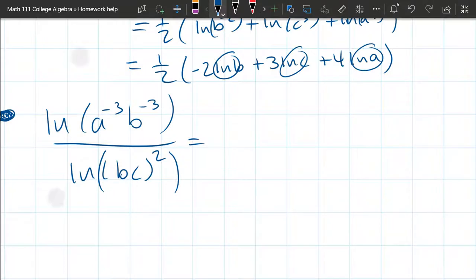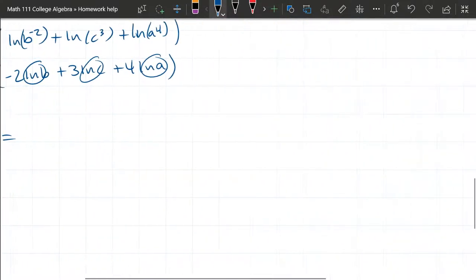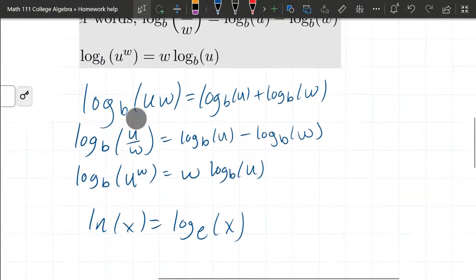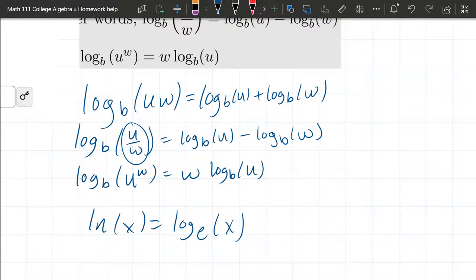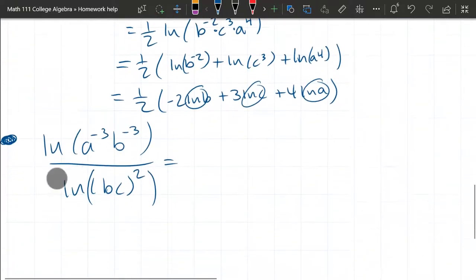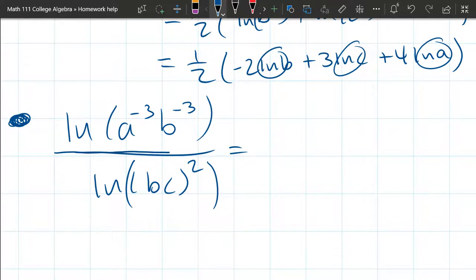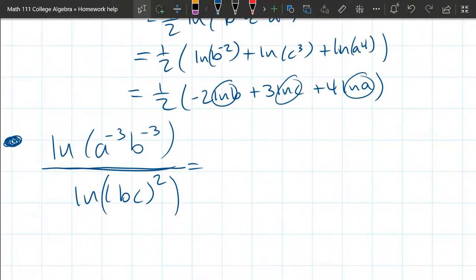First of all we're dividing logs. There's no way to simplify that. If you think about it, there's a division rule, yes there is a division rule, but it's only when division's happening inside. We have two different logs and they're not subtracted they're divided. So we cannot use any of these properties over here to simplify that fraction. So basically this fraction is never going to get simplified out. Our answer or the simplification is going to happen in the numerator and the denominator separately.